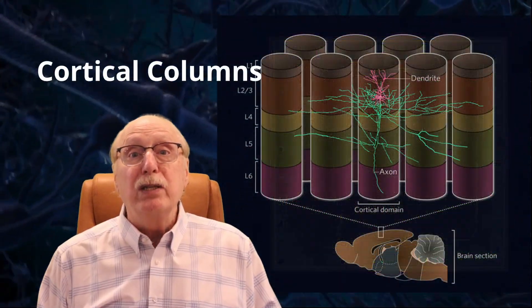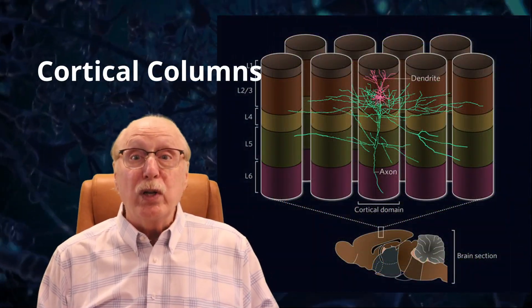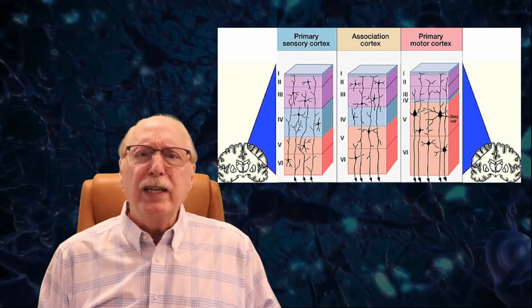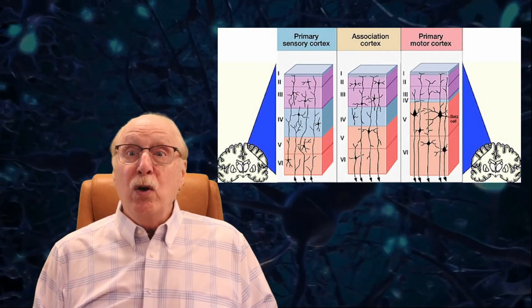The neocortex appears surprisingly uniform. Unlike a computer chip where different regions look and act very differently, the neocortex consists of millions of repeating structures called cortical columns. These aren't identical, but they're close. Which raises a new question. If all these columns are so similar, how do they produce such vastly different capabilities, from vision to language to reasoning to love?